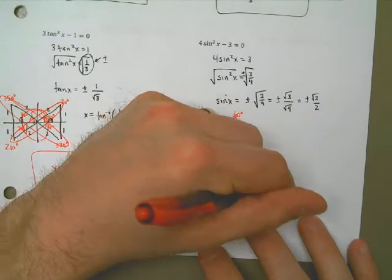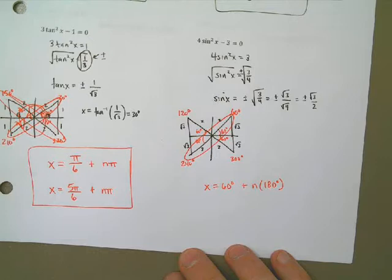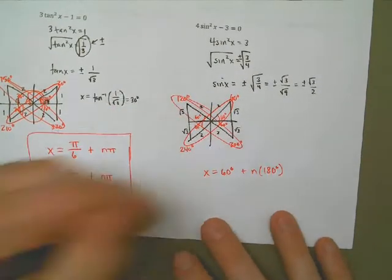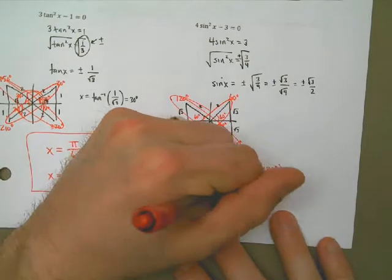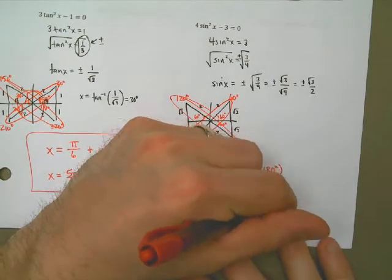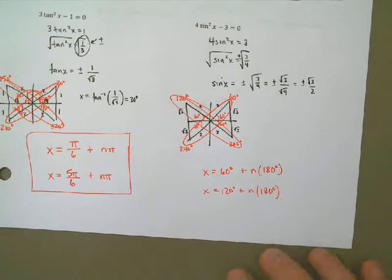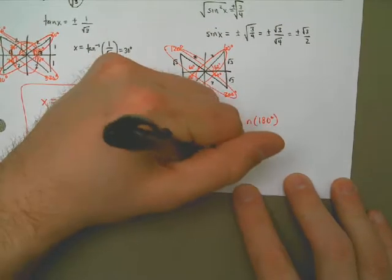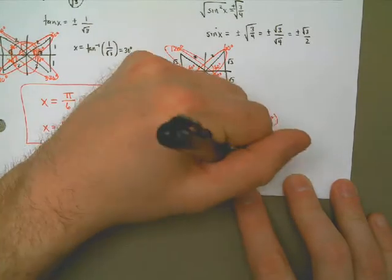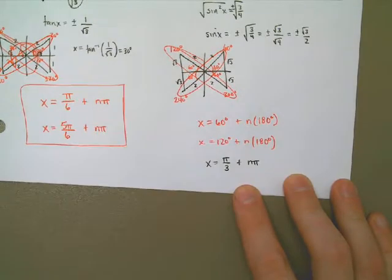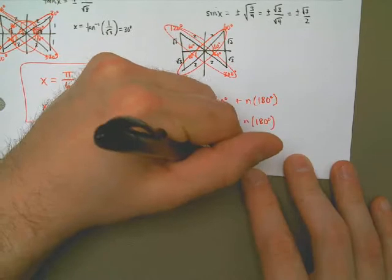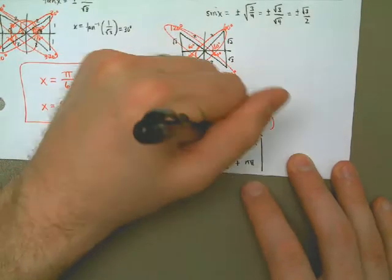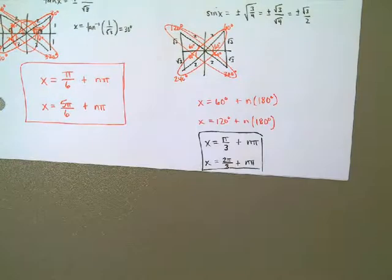Since it just says solve, we're going to answer in radians, so I need to convert everything to radians. My final answer is x is equal to pi over 3 — which is 60 degrees — plus n pi, or x equals 2 pi over 3 — which is 120 degrees — plus n pi. And there are the solutions to this problem.